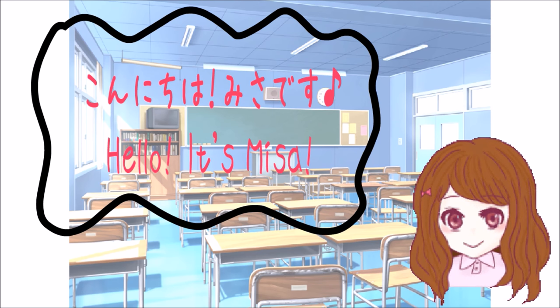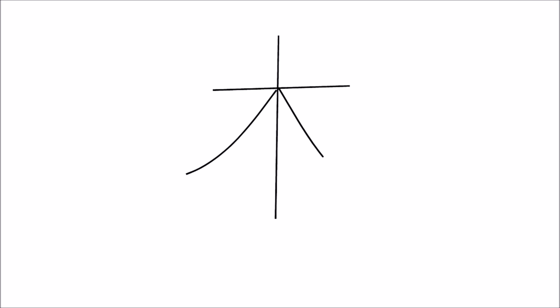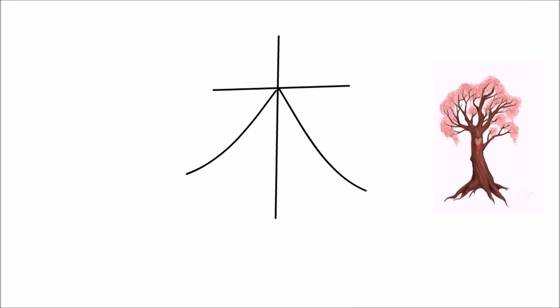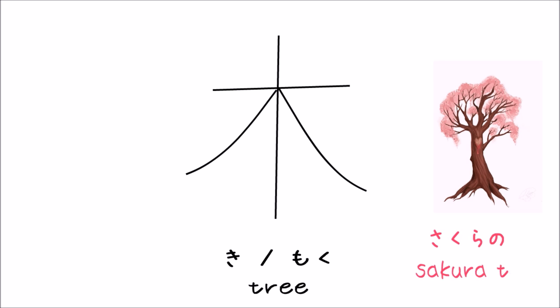This time we'll start off with the kanji for tree. This kanji was created out of the shape of a tree. The kunyomi or the Japanese reading is ki. The onyomi is moku. So as the noun tree, you use ki. Sakura tree in Japanese would be sakura no ki.